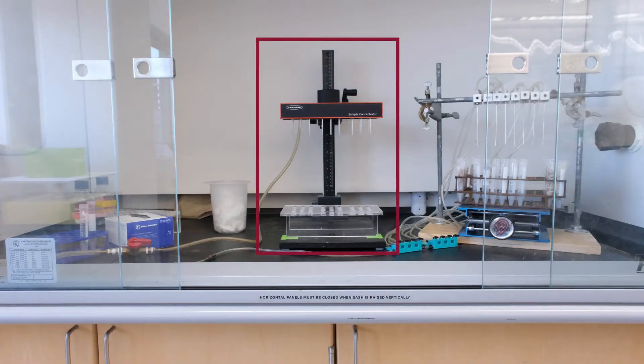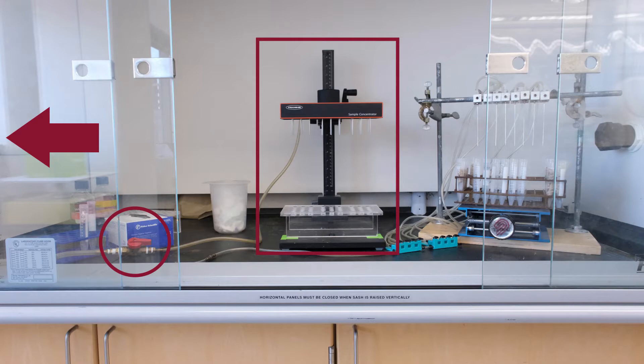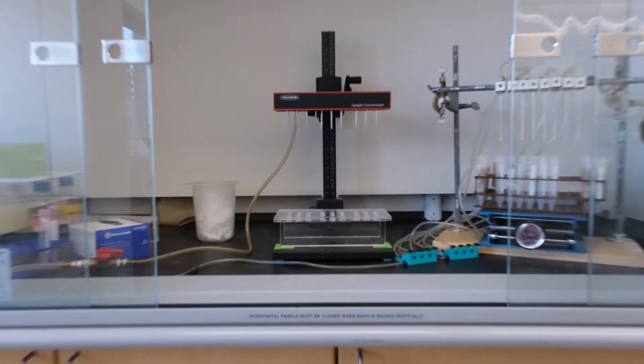This is the 36-slot sample concentrator. The nitrogen tank located next to the hood is attached to the sample concentrator by tubing, controlled by this red valve. Make sure that the valve is open, where the handle is parallel to your tubing, before starting gas flow.